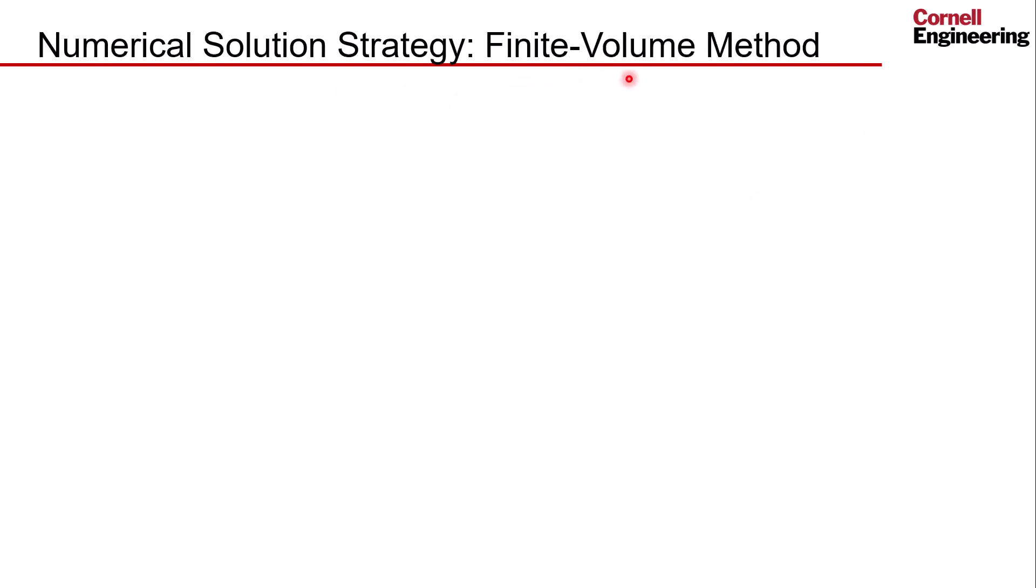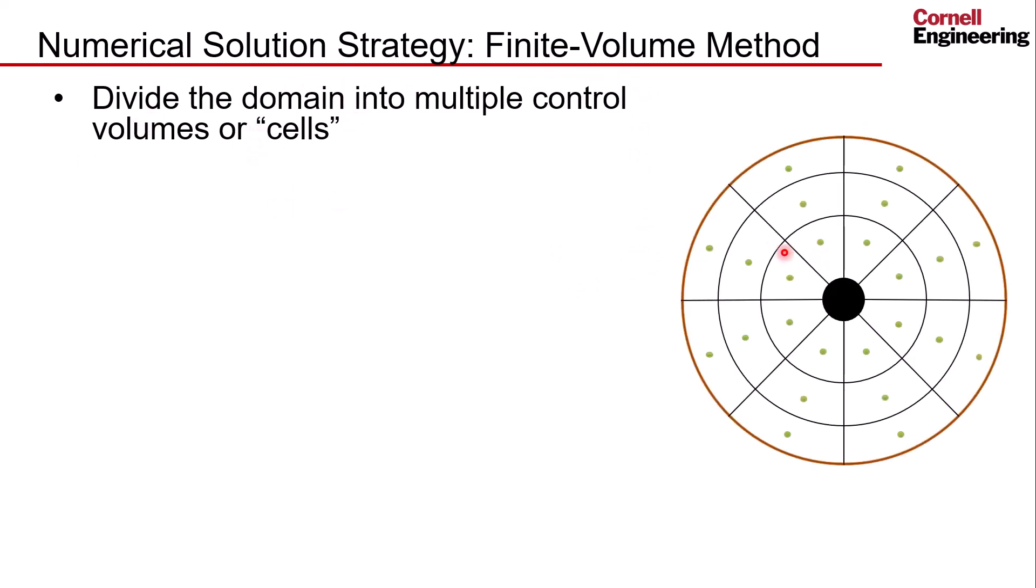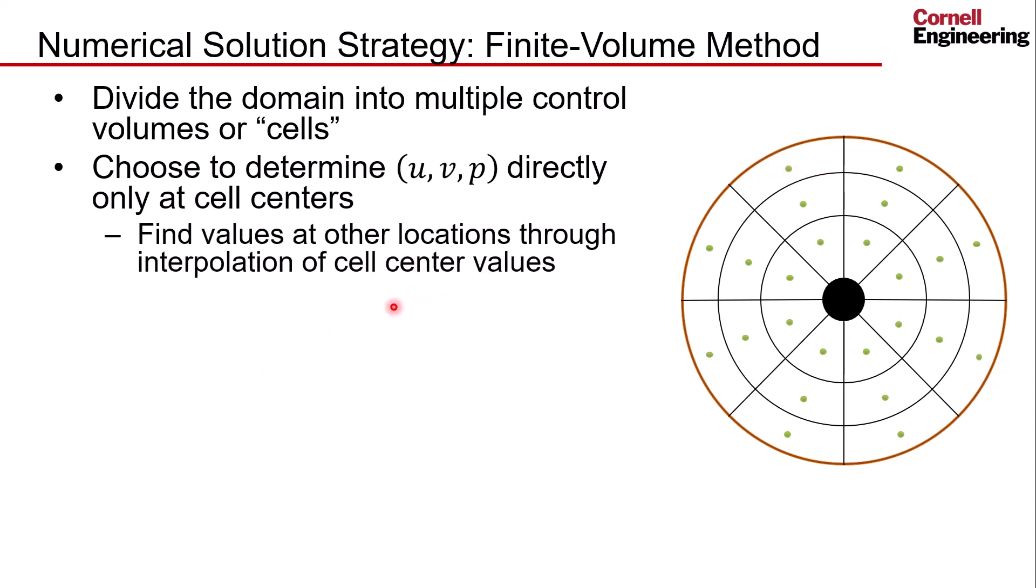The numerical solution strategy in the finite volume method is to divide the domain into multiple control volumes or cells. This is shown schematically here. We choose to determine the primary unknowns U, V, P directly only at the cell centers. So if this were my cell, I would determine U, V, P only at the center of that cell, and that cell center value is an approximation for the average of each of those values within that cell.